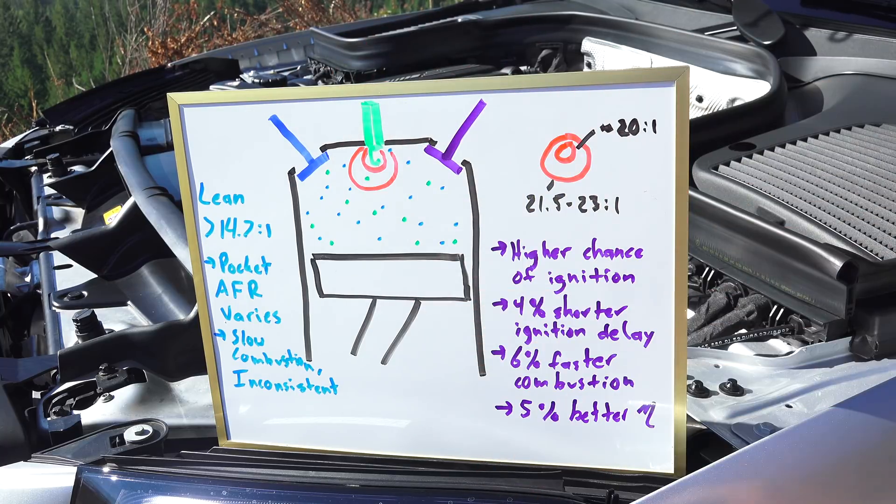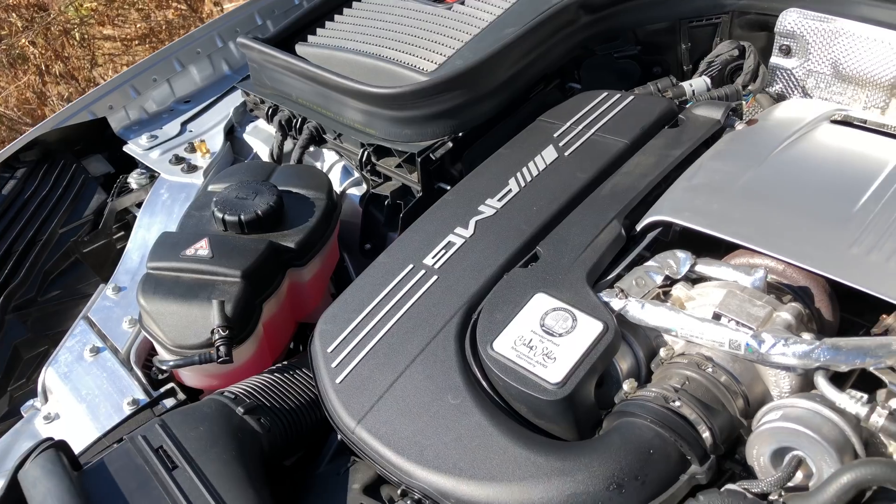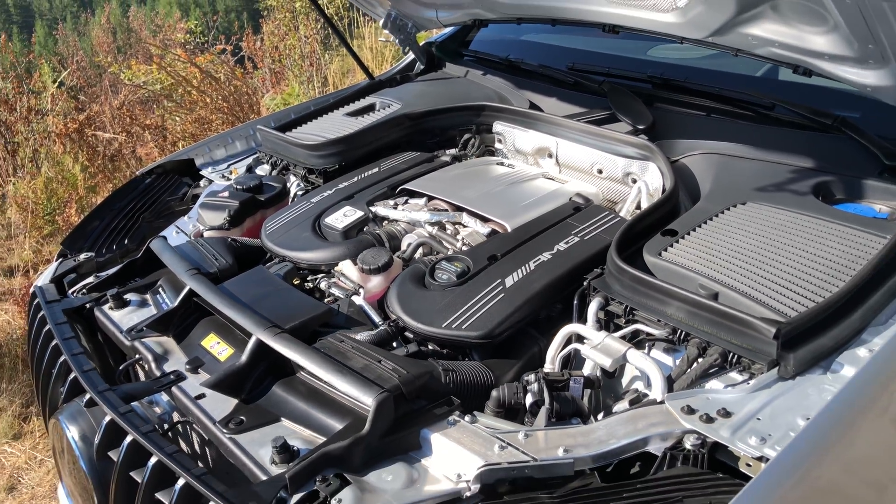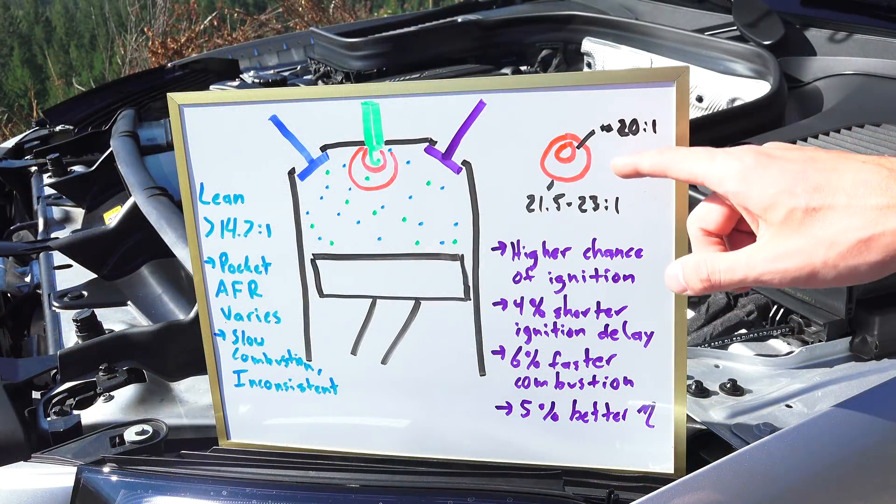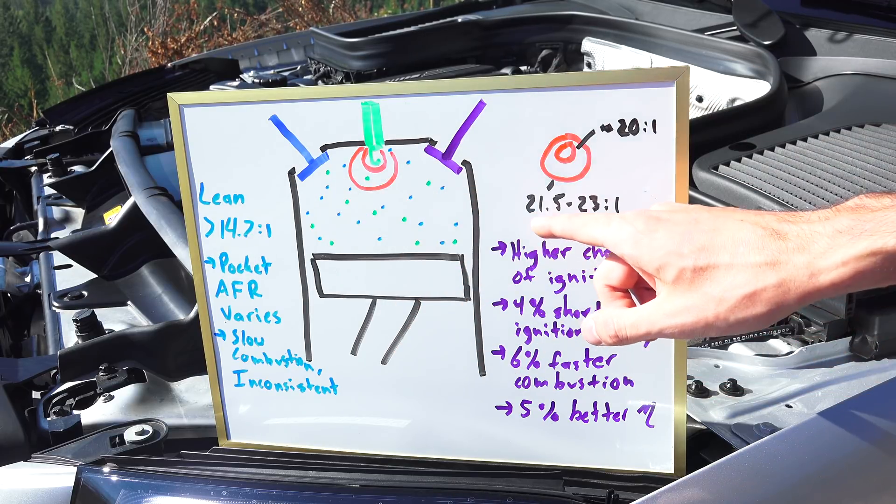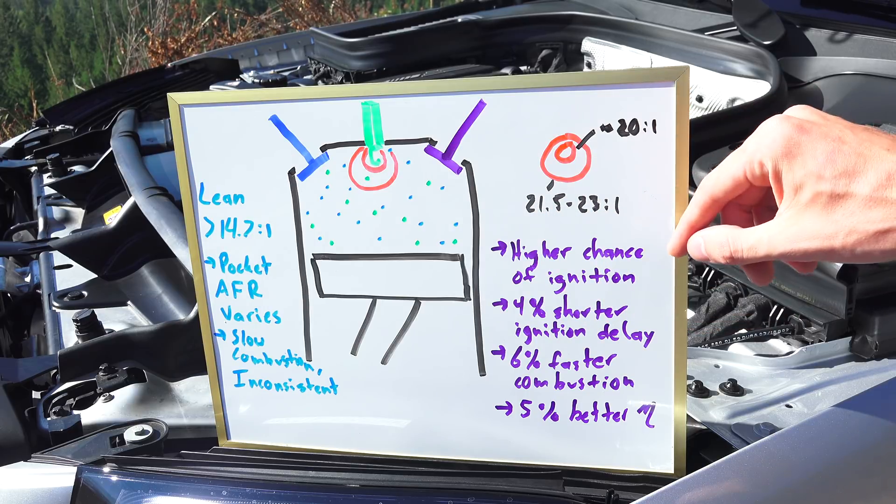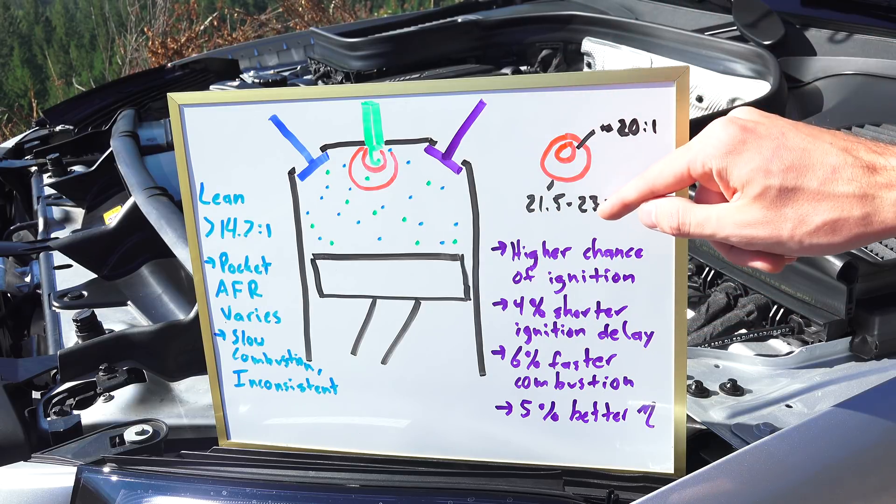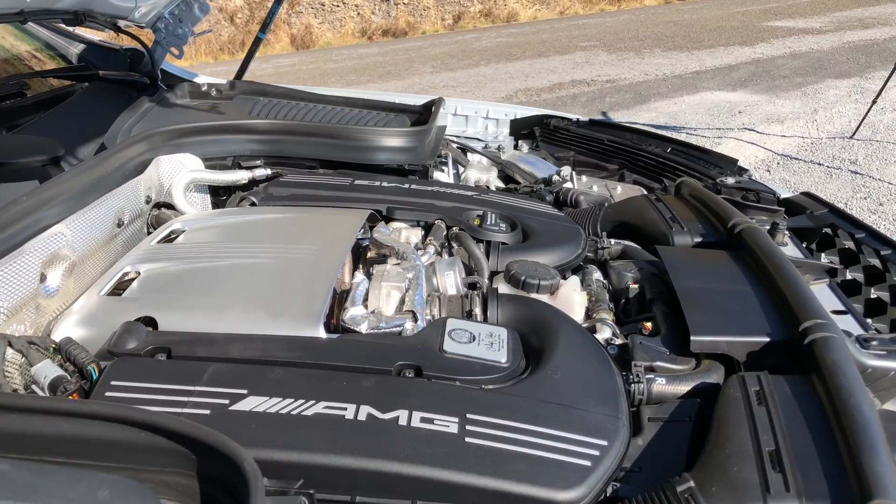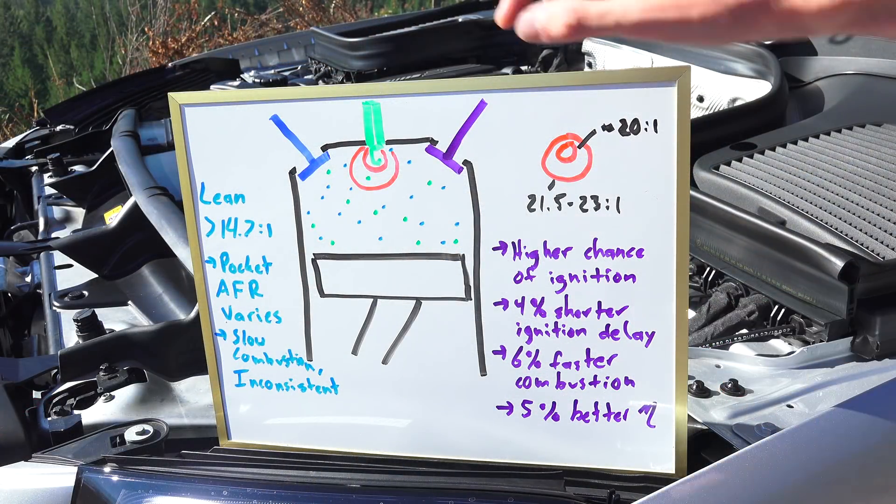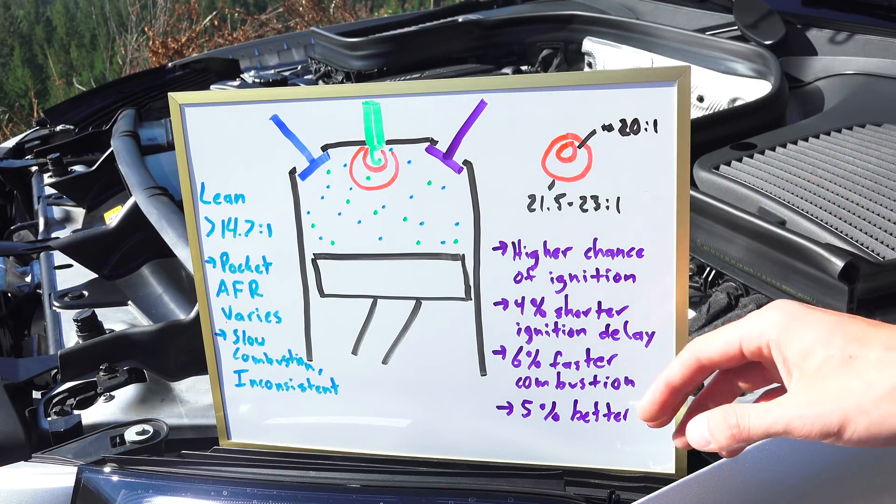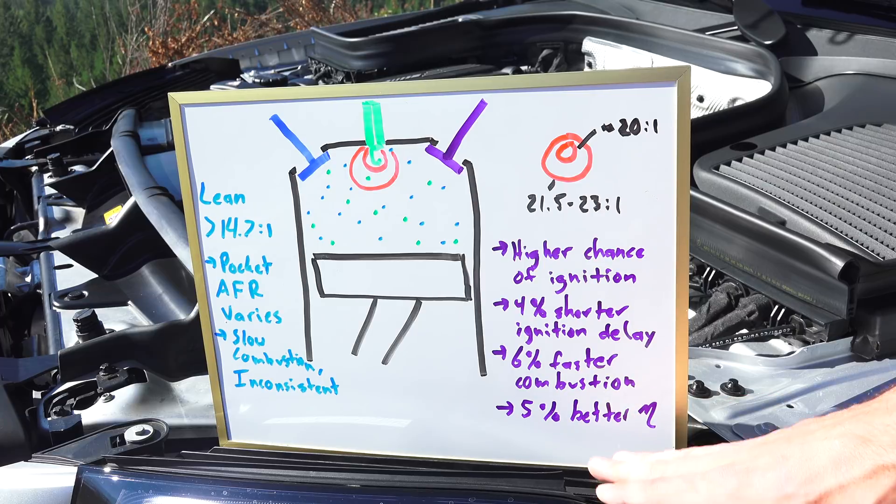And so as a result you get more consistent combustion and you get faster combustion. So the papers that I read looking into multi-spark ignitions were seeing that you could get fairly consistent combustion with a single spark with air fuel ratios as high as 20 to 1, but if you're using a multi-spark ignition you could use air fuel ratios a little bit higher, about 21.5 to 23 to 1, and still have equally consistent combustion. So you have a higher probability of ignition starting, you have a 4% shorter ignition delay, you have 6% faster combustion, and all of this results in a 5% improvement in efficiency.